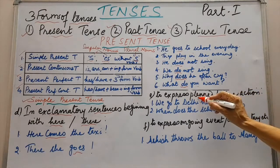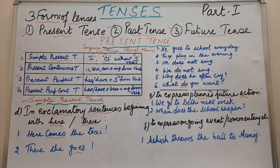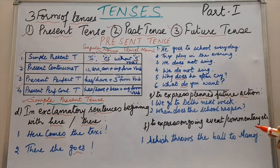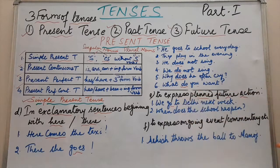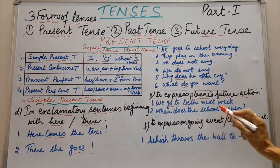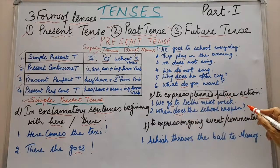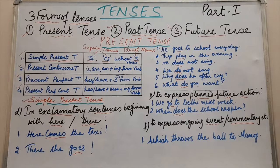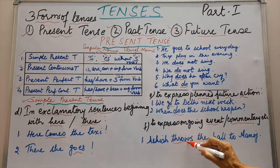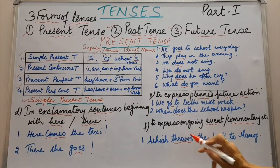Next is to express planned future action. Sometimes we make planning for future, so when we have a plan, we can express ourselves in simple present tense. Example: we go to Delhi next week — we have planned, so we have used simple present tense. When does the school reopen? — interrogative sentences can also be asked this way. Next, to express ongoing event or commentary. Commentaries are always narrated in simple present tense. Like: Ashish throws the ball to Manoj — throws is simple present tense.